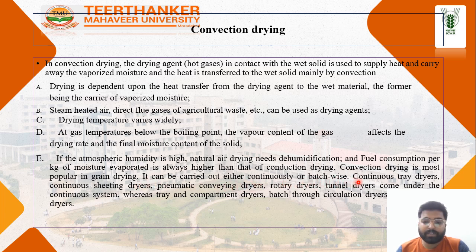Types of convection dryers include continuous tray dryers, continuous heat dryers, pneumatic convection drying, rotary dryer, and tunnel dryer under the continuous system. Batch methods include wire tray dryer, compartment dryer, batch dryer, and circulatory dryer.